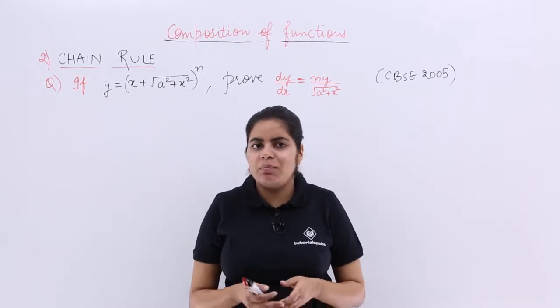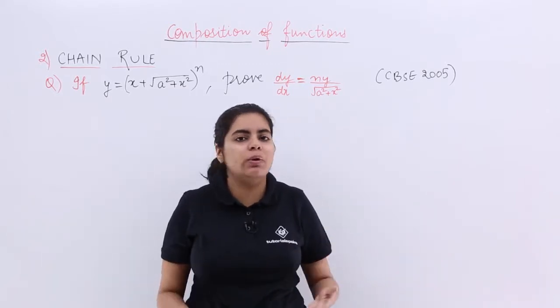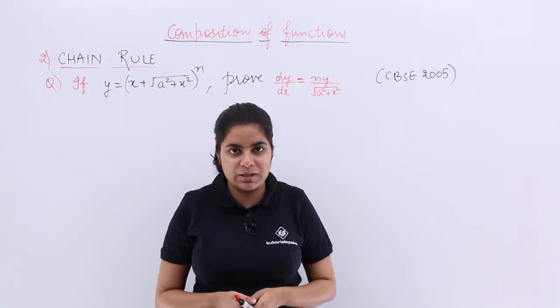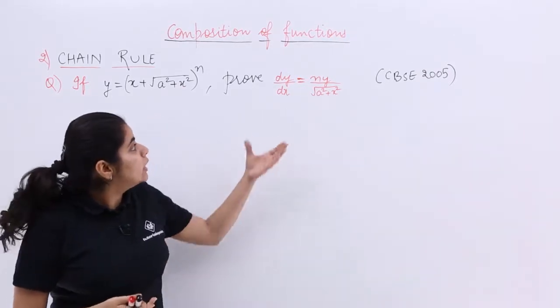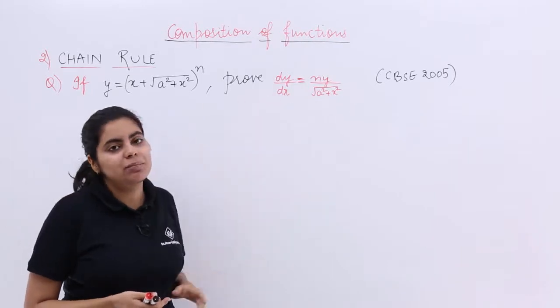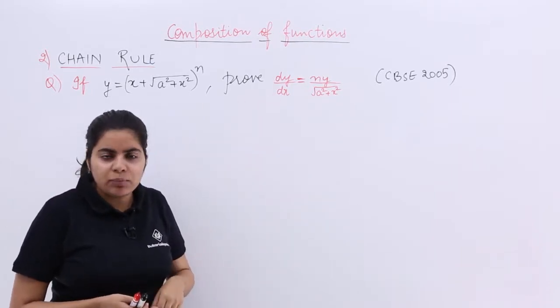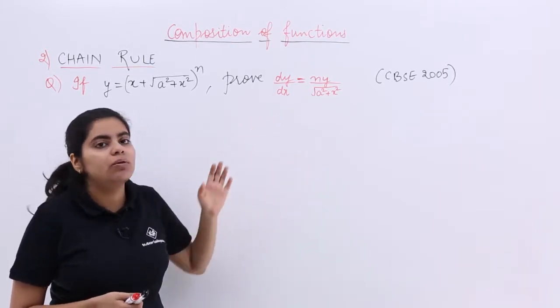But the question this time is not a solution based question, rather a proof based question. The question says if y equals something called this, then prove that dy by dx is something called this. For proving, first let's find out dy by dx.